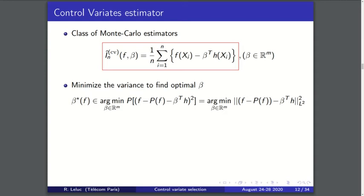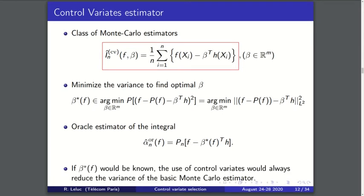The natural question here is: what is the best value for β? We can choose β to minimize the variance of our estimate, and this boils down to the problem of finding the best approximation in the space L² of the function f minus P(f). Once we have computed the β*, we can plug it into the formula and each value of β will give a Monte Carlo estimate. Note that when you use control variates you always reduce the variance of your estimate.